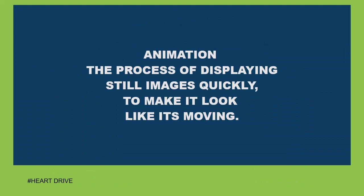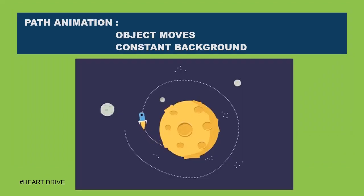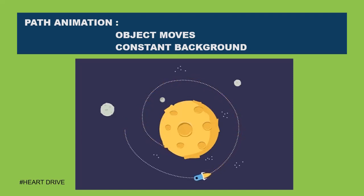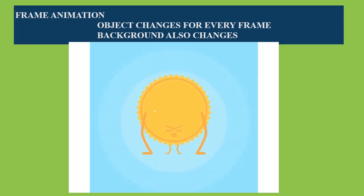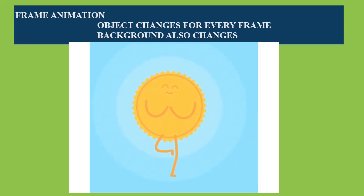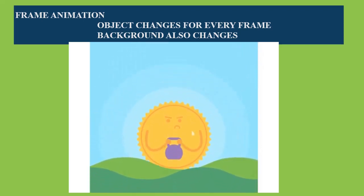Animation is the process of displaying still images so quickly that those images look like they are moving. Animation is of two types: path animation and frame animation. In path animation, only the object moves and the background remains constant. In this example, we can see the background of the universe and the planet remaining constant while only the satellite revolves around — this is path animation. In frame animation, both the object and the background move. In this example, the sun moves and the background of the sun keeps changing as well. This type is called frame animation.